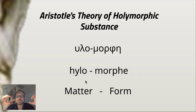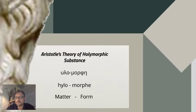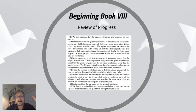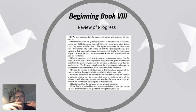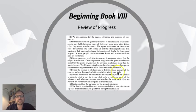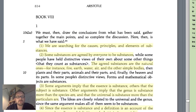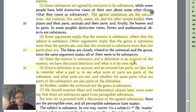In today's discussion, Aristotle is going to link the discussion of matter with potentiality, and the discussion of form with actuality. By making this categorical leap forward, Aristotle hopes to offer a solution to these longstanding problems. At the beginning of Book 8, Aristotle begins with a kind of review, and I'll switch to my highlighted text to show what Aristotle is writing about.